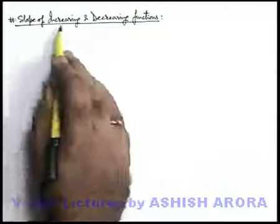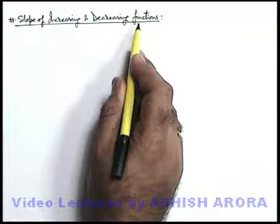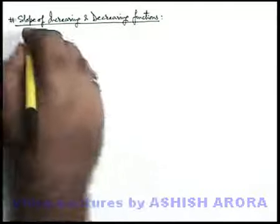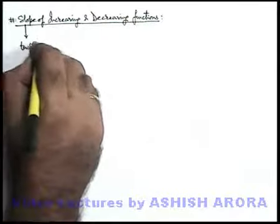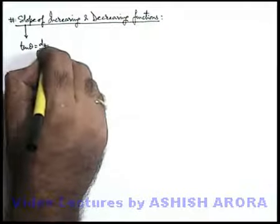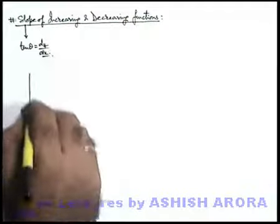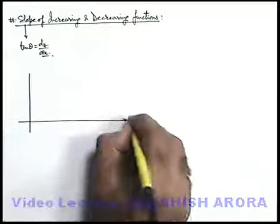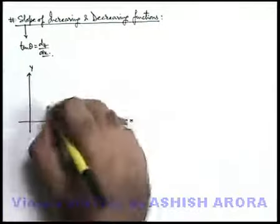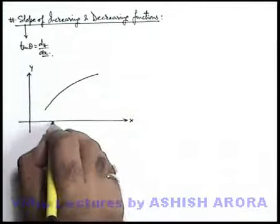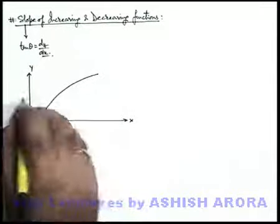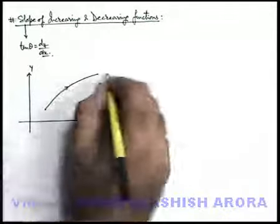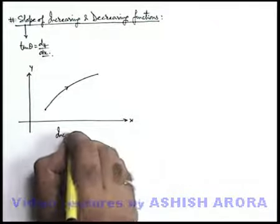Let's discuss the slope of increasing and decreasing function. We have studied that the slope of a function can be given by tan theta or it can be given by dy by dx. Say if we talk about an increasing function. Increasing means, on substituting the values of x or on increasing the value of x the value of y also increases. Such a function we call an increasing function.